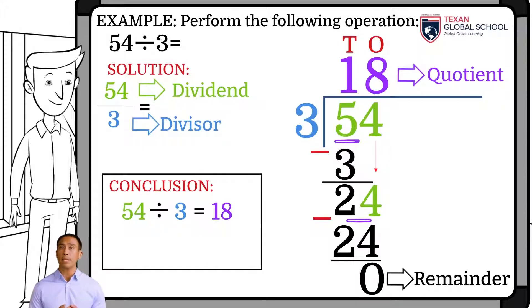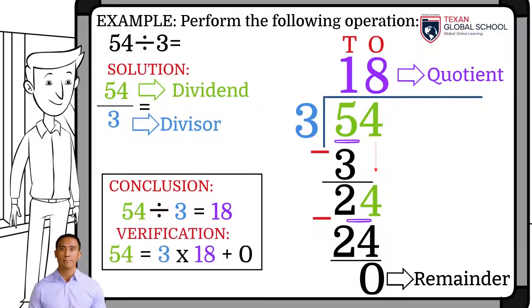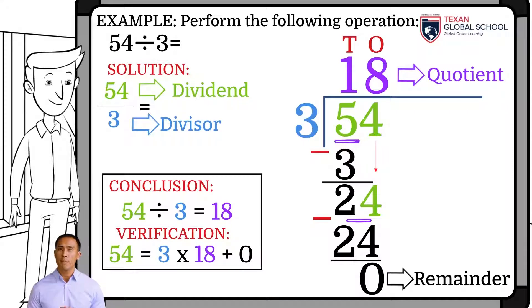We can verify using Euclid's lemma. So, 54 must be equal to the product of the divisor 3 with the quotient 18, plus the 0 remainder.